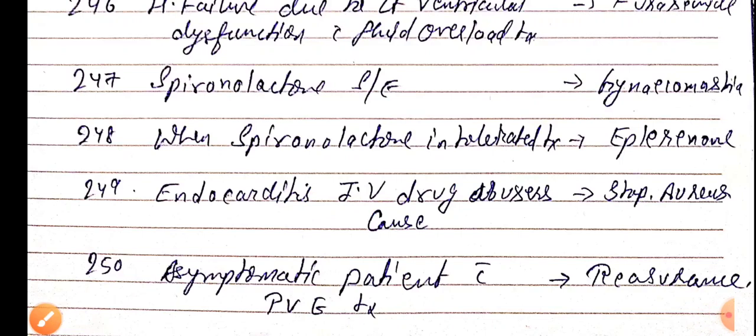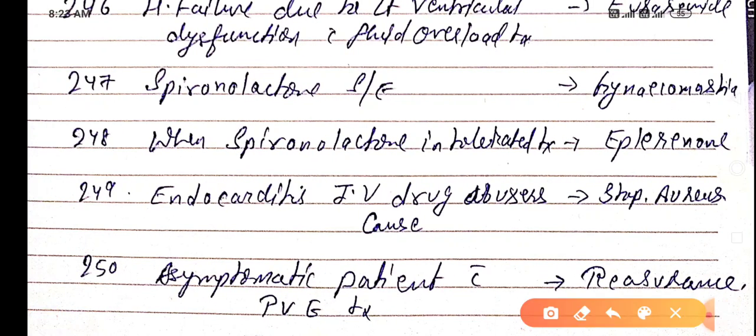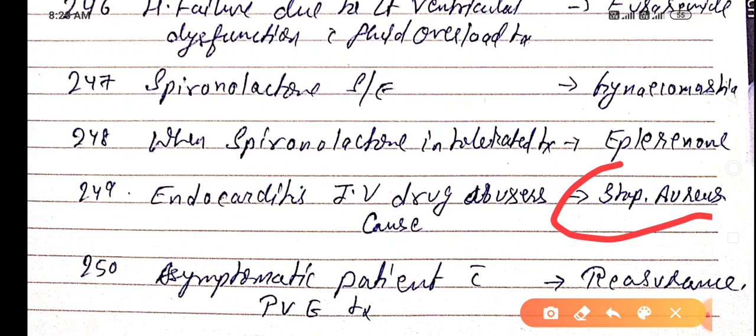Asymptomatic patient with premature ventricular ectopies, six-time ventricular ectopies appears, five times, four times, then reassurance. There is no treatment for ventricular ectopies.